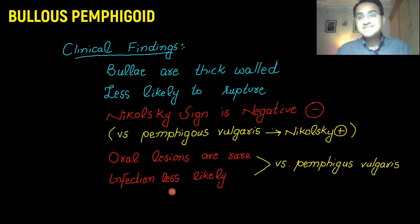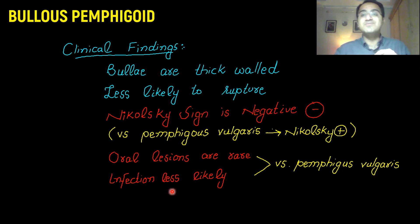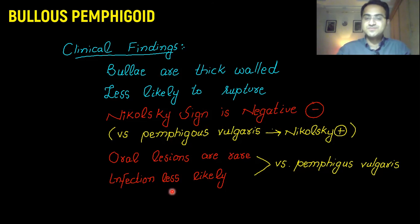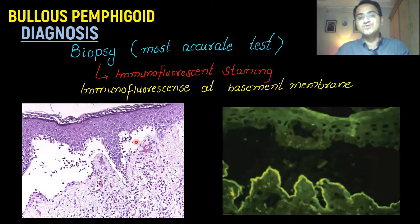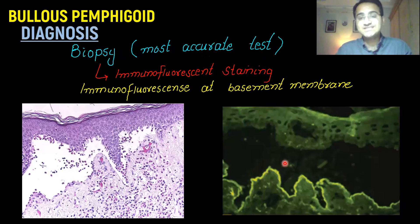Infection is less likely in bullous pemphigoid since the blisters do not rupture easily and do not get exposed to bacteria. Diagnosis of bullous pemphigoid is made on biopsy, in which you examine either a histology picture or perform immunofluorescence staining — the staining appears around the basement membrane.